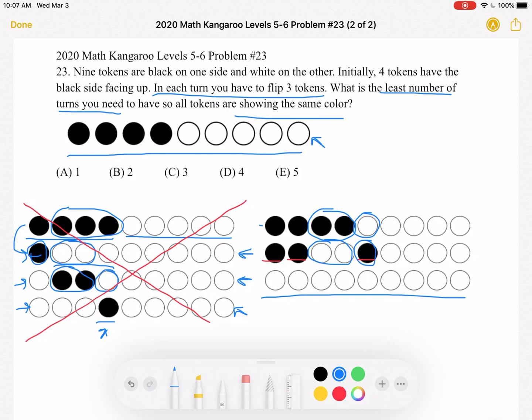So again, we started with this. We flipped once, got to this step, flipped again. So we had a total of two turns to make them all the same color. And that is answer choice B.